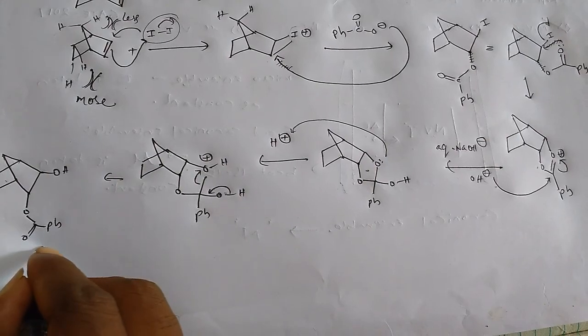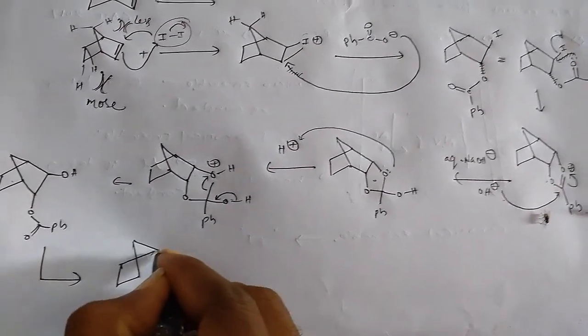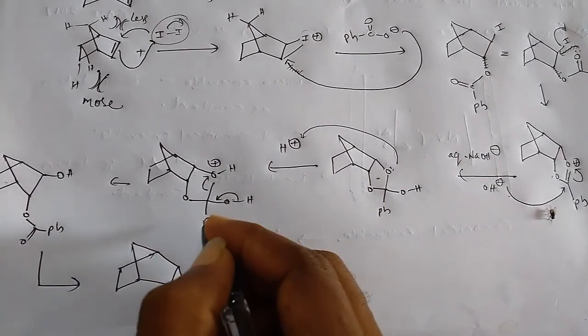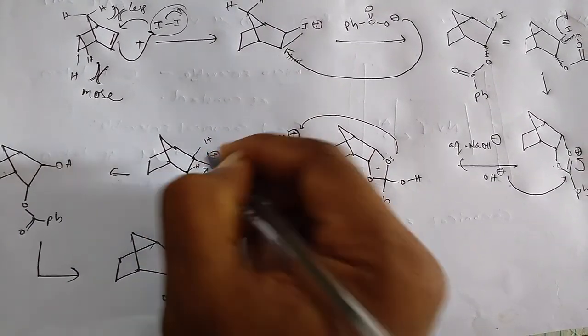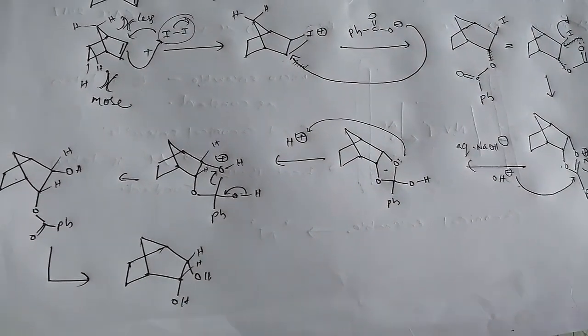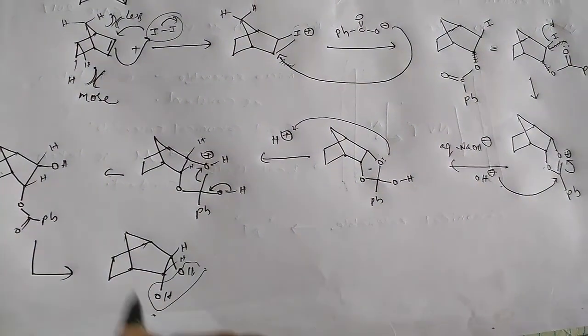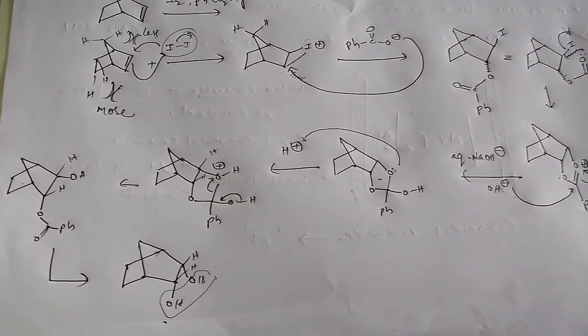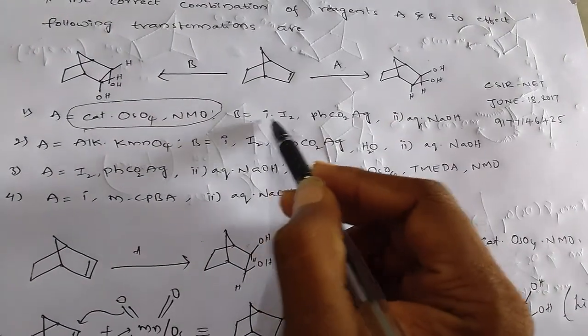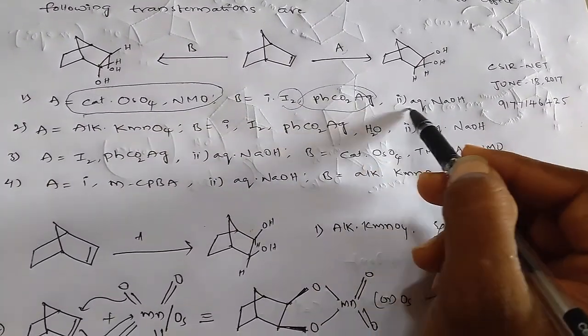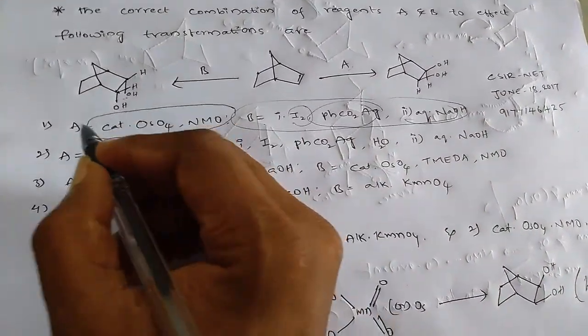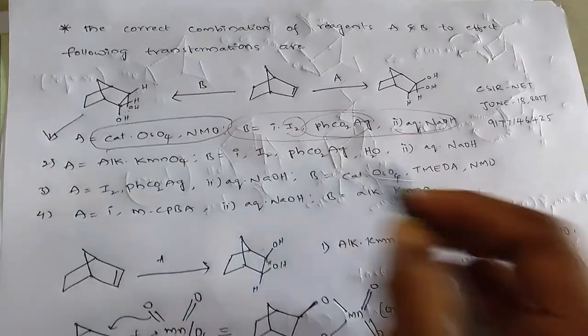From this, we can get... so this is the product. This is the Woodward modification. So this OH group goes below of this cyclic bridged compound. So from this, we can give the option: this one, iodine and silver acetate with aqueous NaOH, is the correct answer for the given problem.